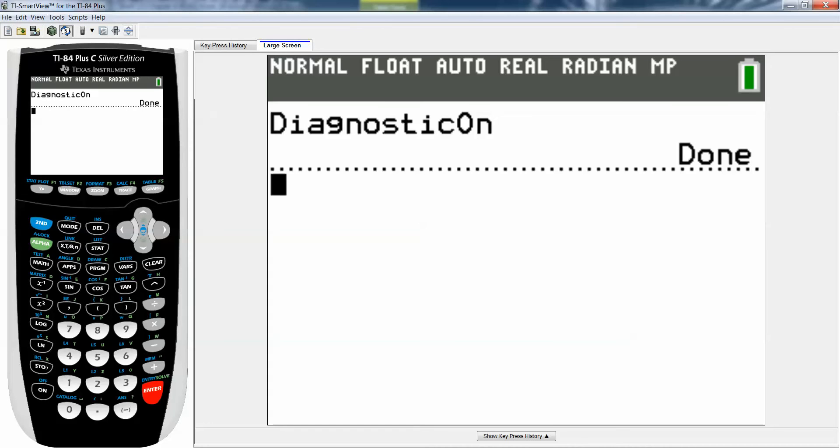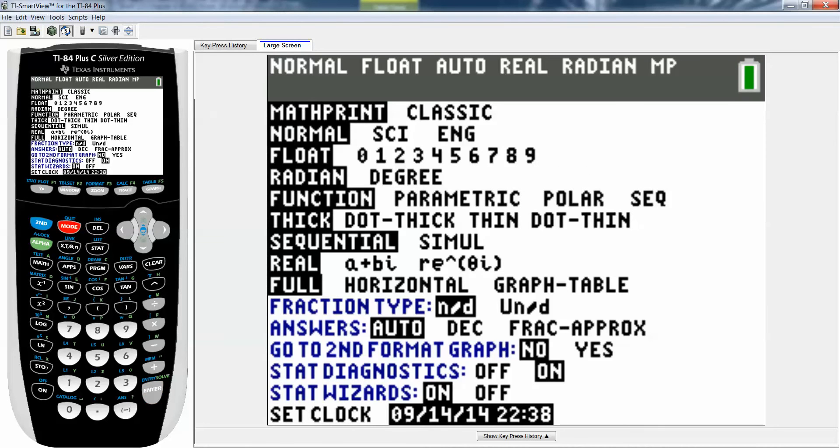The other way to do it is if you hit the mode button, and then down at the very bottom it says stat diagnostics. See how it's off and then it's on? Because I just turned them on it's on. If I set it to off they'd be off but I don't want to do that, I want on.